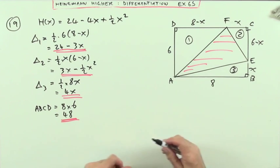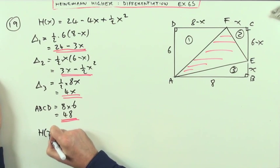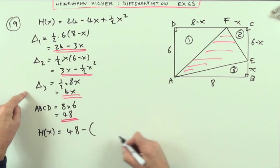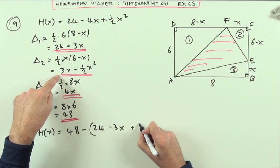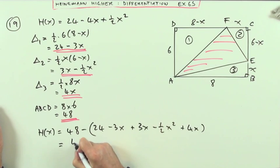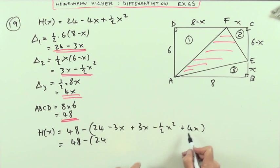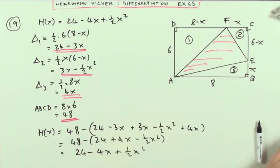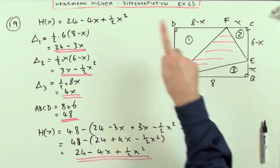And this red triangle that was left in the middle would then be given by this. So H of X would be the whole thing, 48, take away the sum of those three triangles. So take away 24 minus 3X, 3X minus a half X squared and 4X. So that's 48 minus, that's a bit nasty, there's only one number there, 24, minus 3 plus 3 goes, so plus 4X minus a half X squared. So finally you've got 48, take away 24 is 24, take away the positive minus 4X, take away the negative plus a half X squared. So that was the first bit. Just a little bit of algebra. Show the area of the triangle is given by this expression.